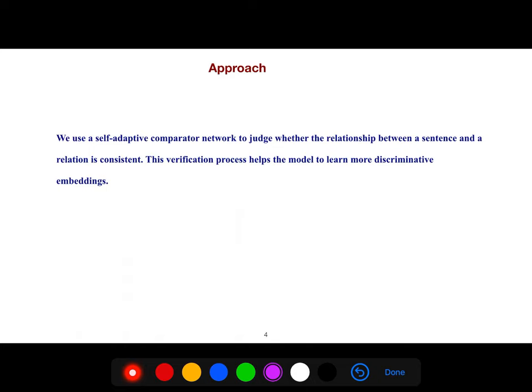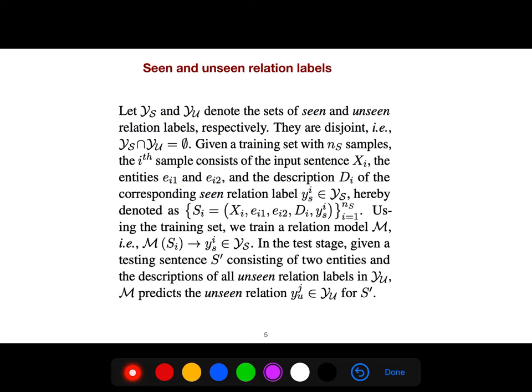So the approach is that they use a self-adaptive comparator network to judge whether the relationship between a sentence and a relation is consistent. This verification process helps the model to learn more discriminative embeddings. So we have a couple of seen relation labels and unseen relation labels. Unseen relations are not seen in the training, so they are different. There is no intersection of these data.